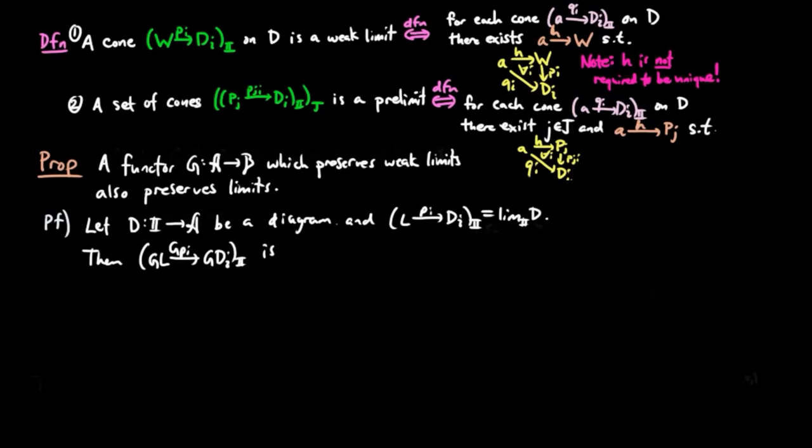Then GPI is a weak limit of GD since G preserves weak limits. However, since limits are the same as weak limits which also are monic sources,